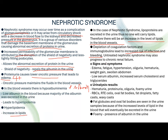Untreated nephrotic syndrome may also progress to chronic renal failure. Signs and symptoms include edema, fatigue, hypertension, oliguria, hematuria, weight gain, swollen abdomen, low serum albumin, increased serum cholesterol, and triglycerides. Urinalysis results include hematuria, proteinuria, oliguria, and foamy urine. RBCs, RTE cells, oval fat bodies, fat droplets, and waxy casts could be visible. Fat globules and oval fat bodies are visible because of increased lipid levels due to hyperlipidemia. Foamy urine is due to high amounts of protein, especially albumin.